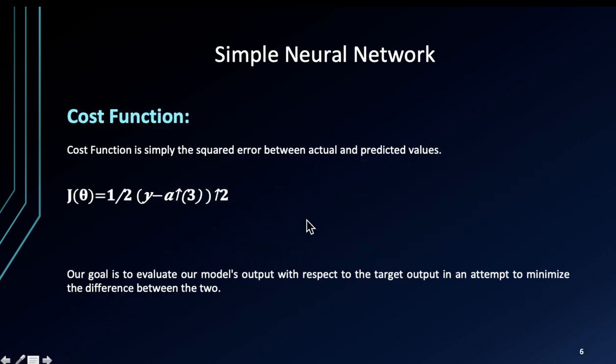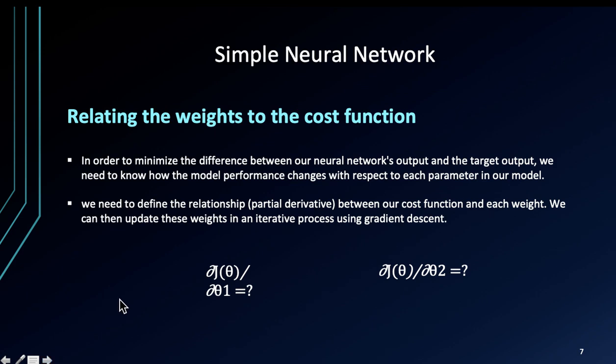The cost function, as we have discussed before, is simply the squared error between the actual and predicted values. Our goal is to evaluate our model's output with respect to the target output which is y, in attempt to minimize the difference between the two. We want to minimize the cost function and in order to minimize the difference between our neural network's output and the target output, we need to know how the model's performance changes with respect to each parameter.